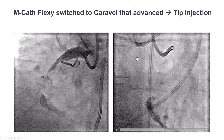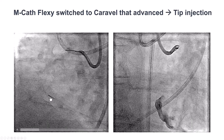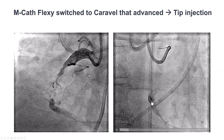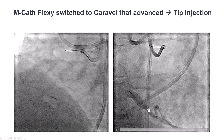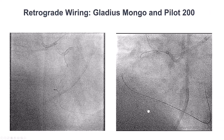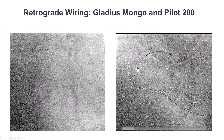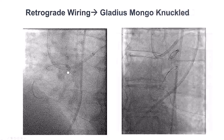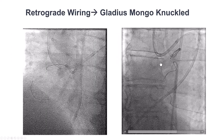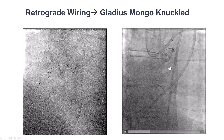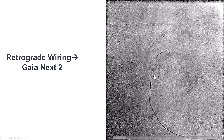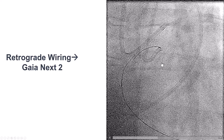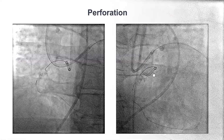We were unable to advance the MCAT Flexi, but we were able to advance a Caravel microcatheter all the way to the distal cap. A distal tip injection showed a relatively blunt cap distally. We tried with different guide wires — a Gladius Mongo and a Pilot 200 — attempting to knuckle them and advance close to the antegrade guide wire, but had significant difficulty. The guide wire entered into a side branch. We then switched to a stiffer penetrating wire, the Gaia Next 2, which advanced a little more, but its course was not following the antegrade guide wire, so we stopped.